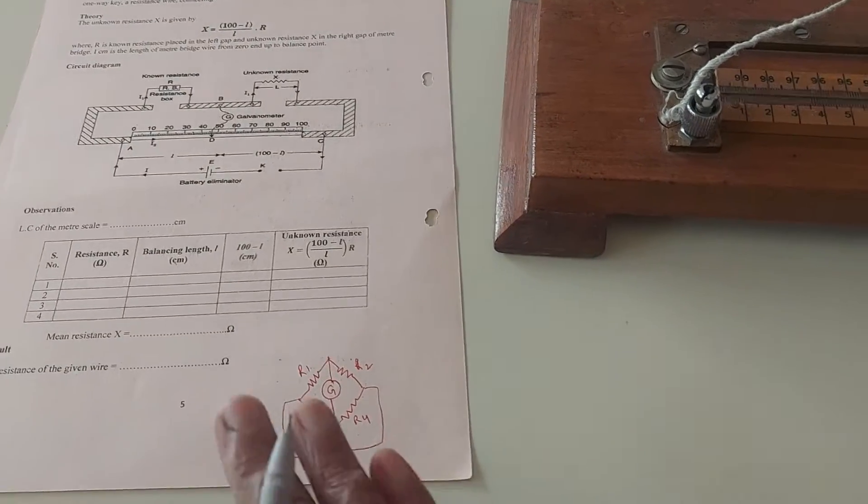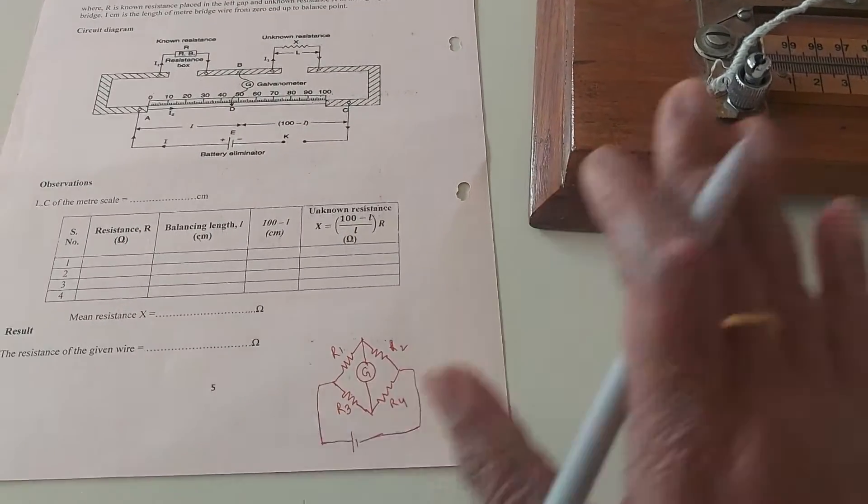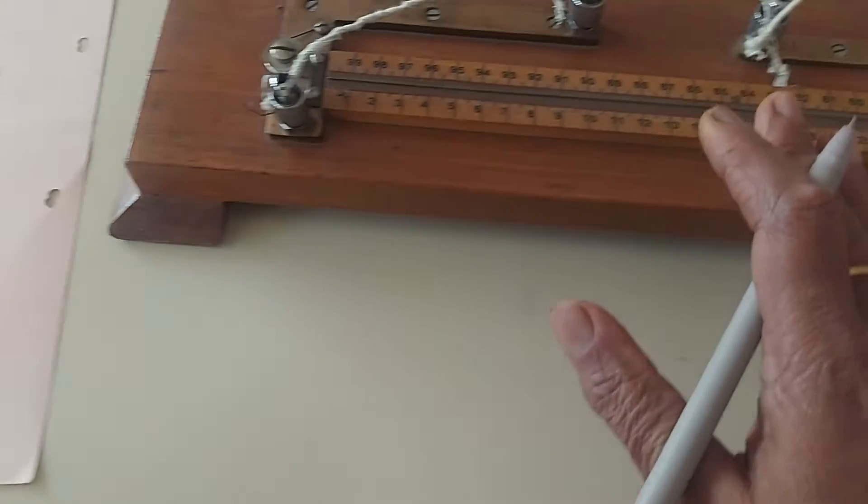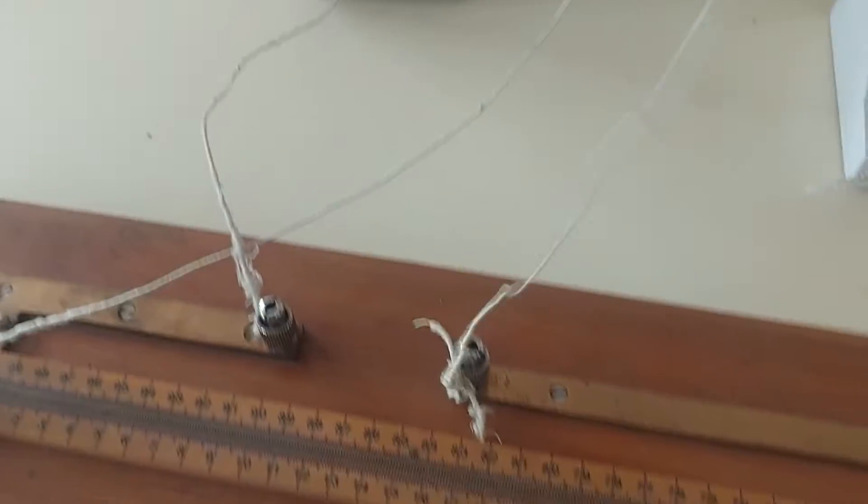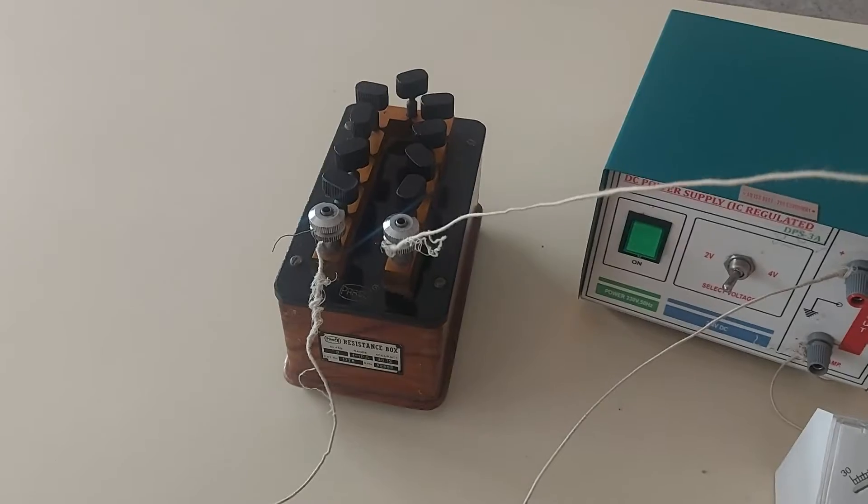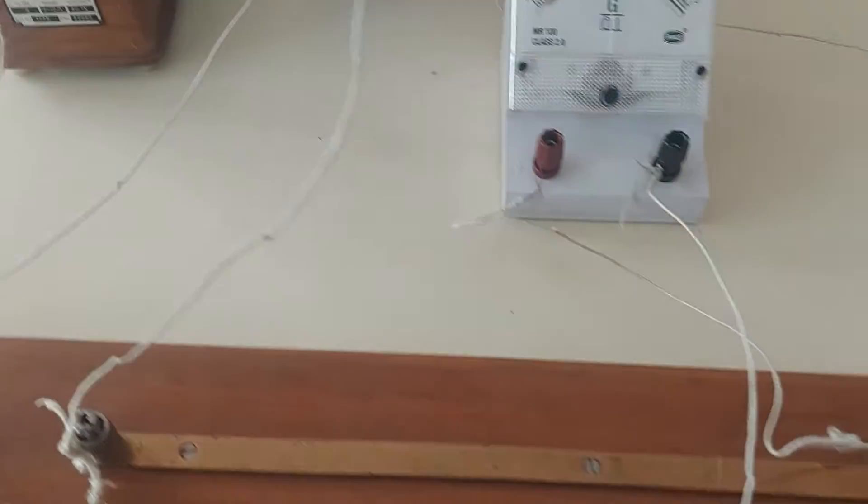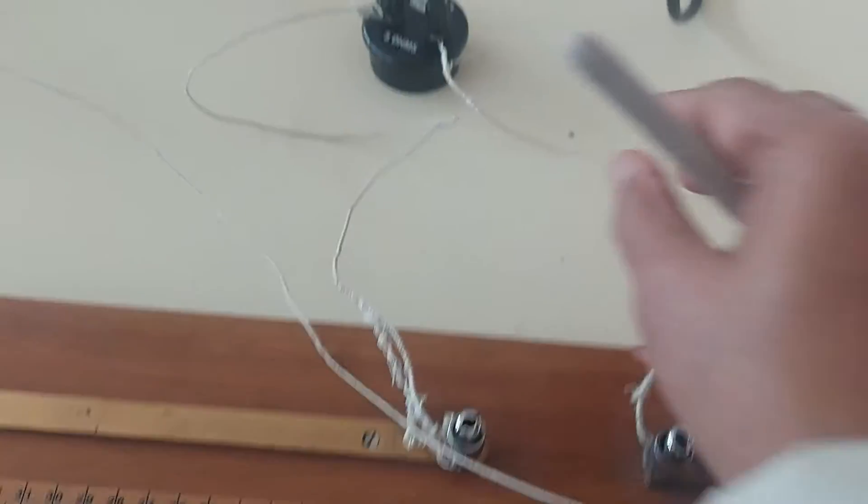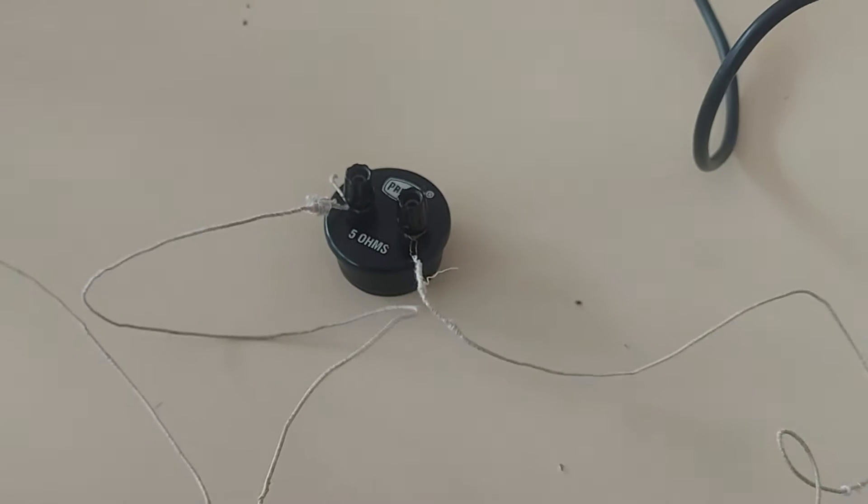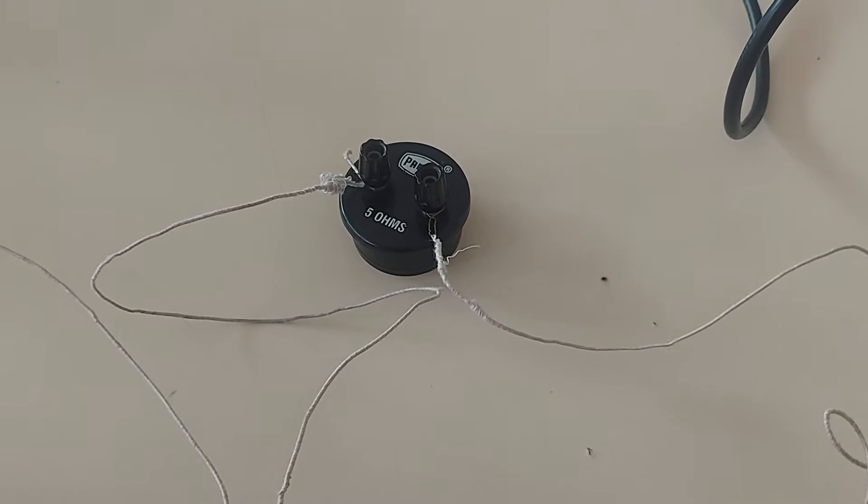Now let us understand how this is used in the meter bridge. This resistance box is used as R1. This standard resistance, here we have a 5 ohm resistance, is used as R2.